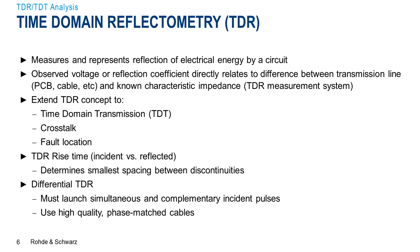With TDT, instead of looking at a reflected pulse, you measure at the far end of your channel — the output of the system — and look at the response there, giving you information about the attenuation of the channel. You can also use TDR to measure crosstalk between different lanes. And one of my favorite benefits of TDR is for identifying and locating faults in the system — opens, shorts, partial connections, things like that. Very intuitive if you're a time domain person.